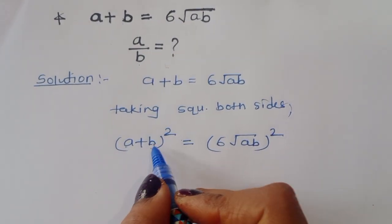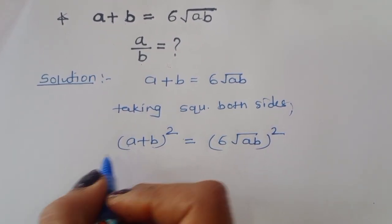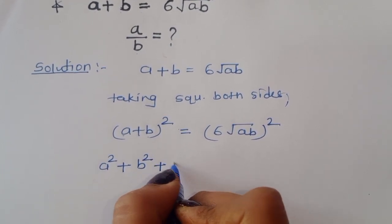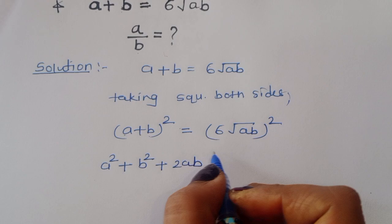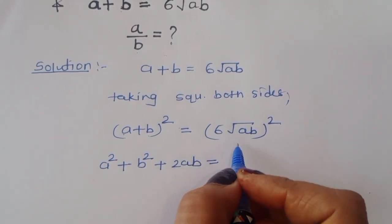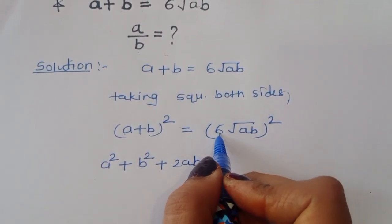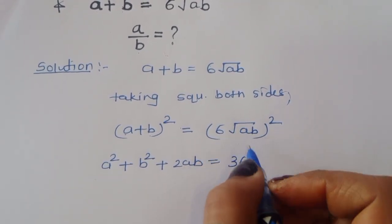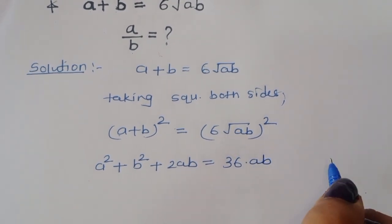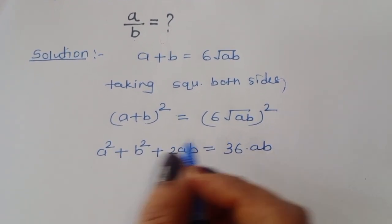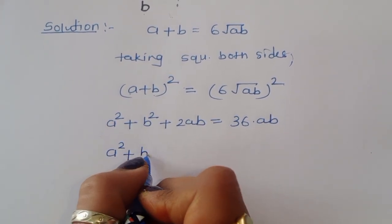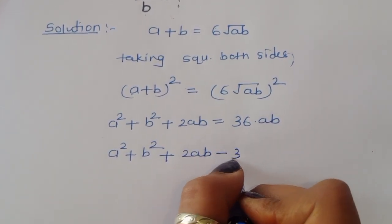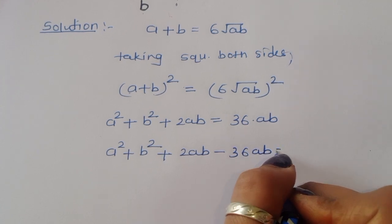Now, expanding a plus b whole square using the formula: a plus b whole square equals a squared plus b squared plus 2ab, and the right side becomes 6 squared times ab, which is 36ab. So we can write a squared plus b squared plus 2ab minus 36ab is equal to 0.